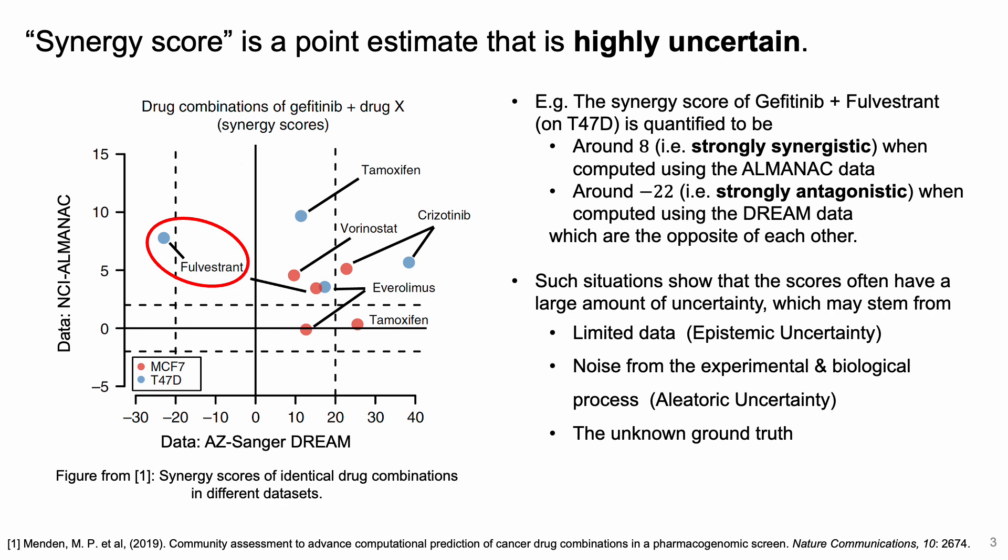This example shows that the synergy score often has a large amount of uncertainty, which may stem from limited data, noise from experimental and biological processes, as well as unknown ground truth. However, existing synergy quantification frameworks have not taken this uncertainty into account. As a result, decisions are often made based on point estimates that are often uncertain, which results in worse efficiency in the drug discovery pipeline.